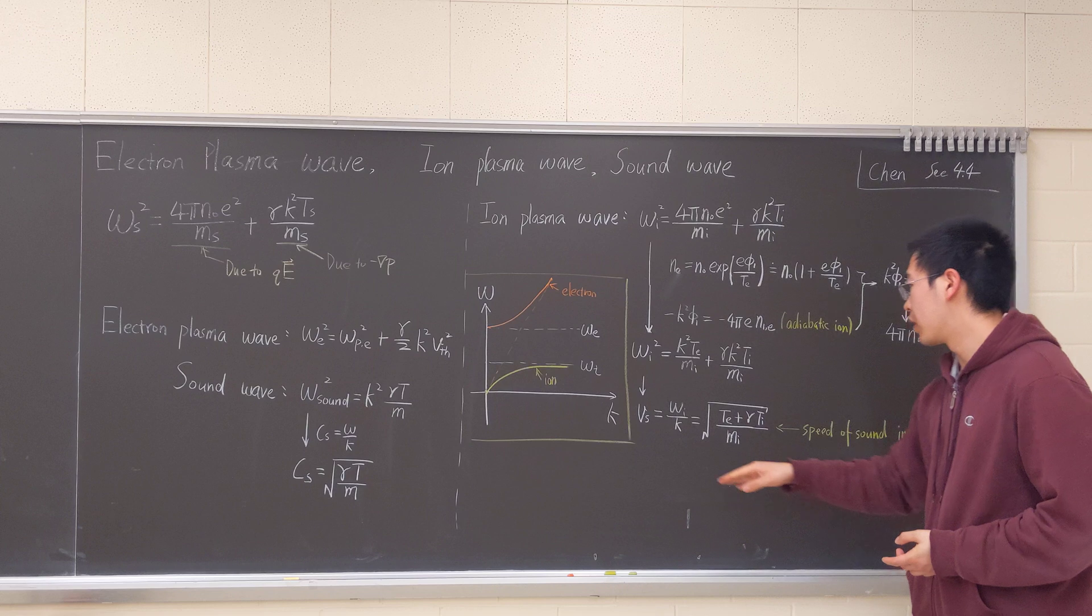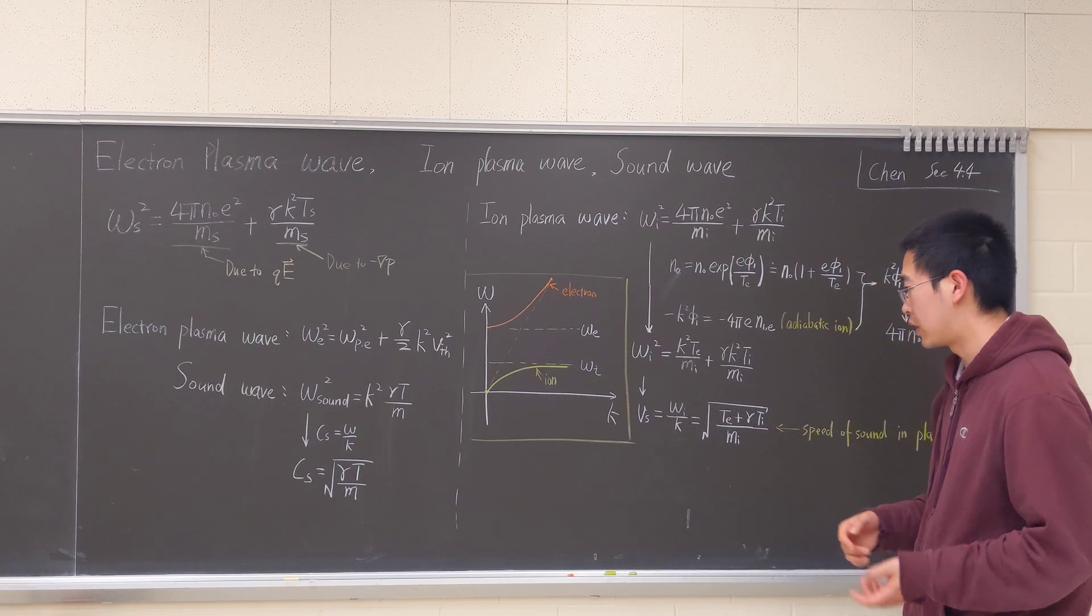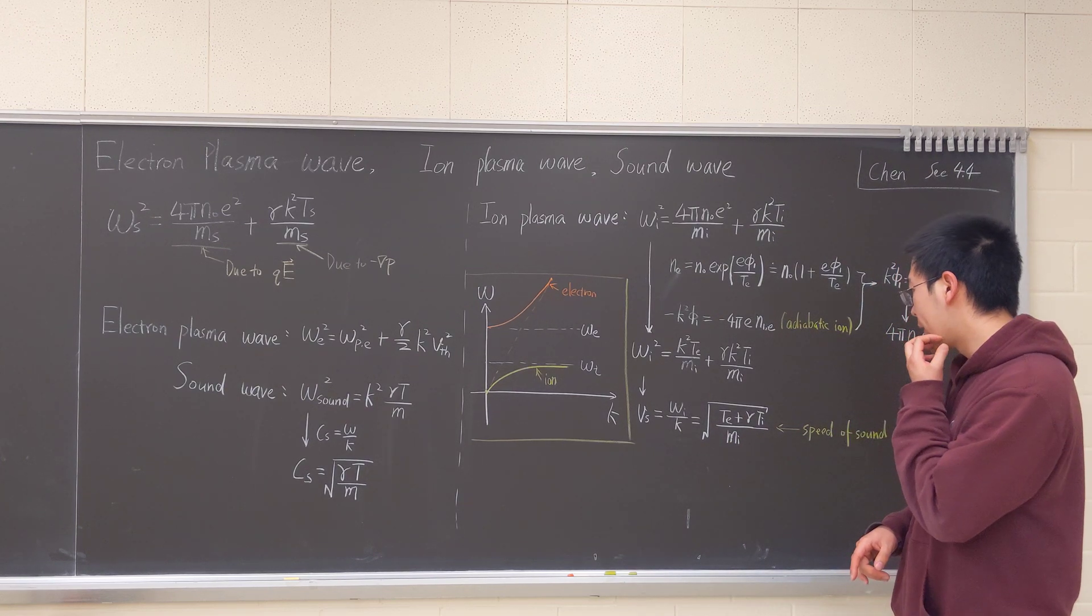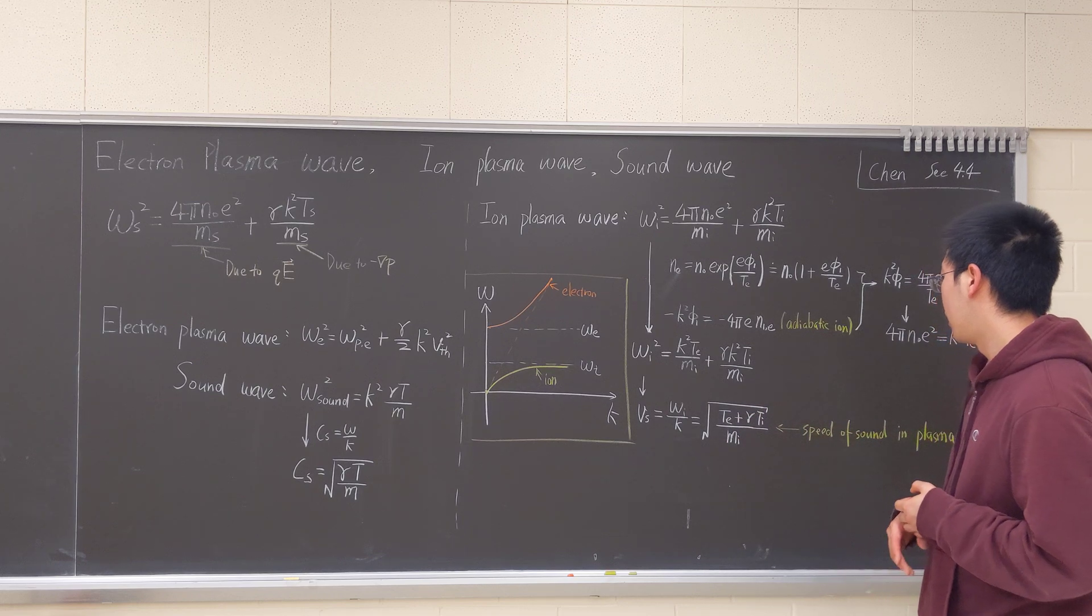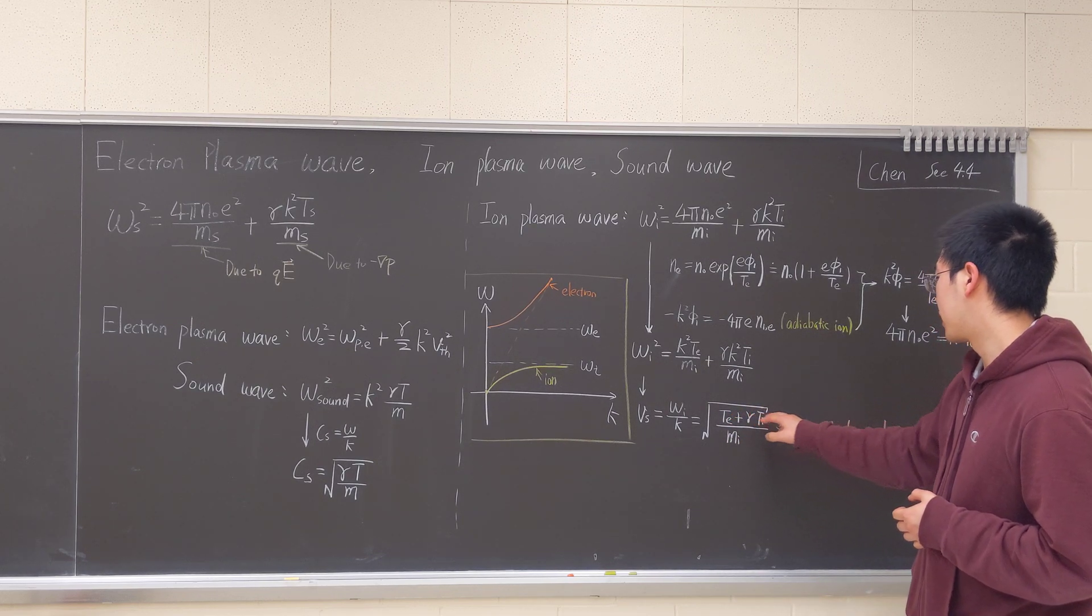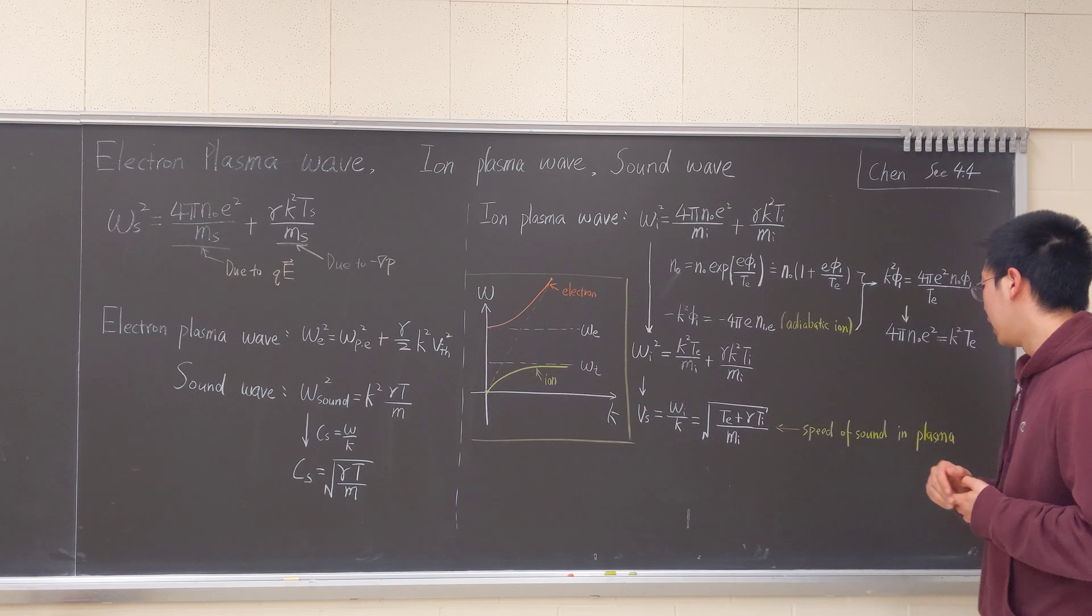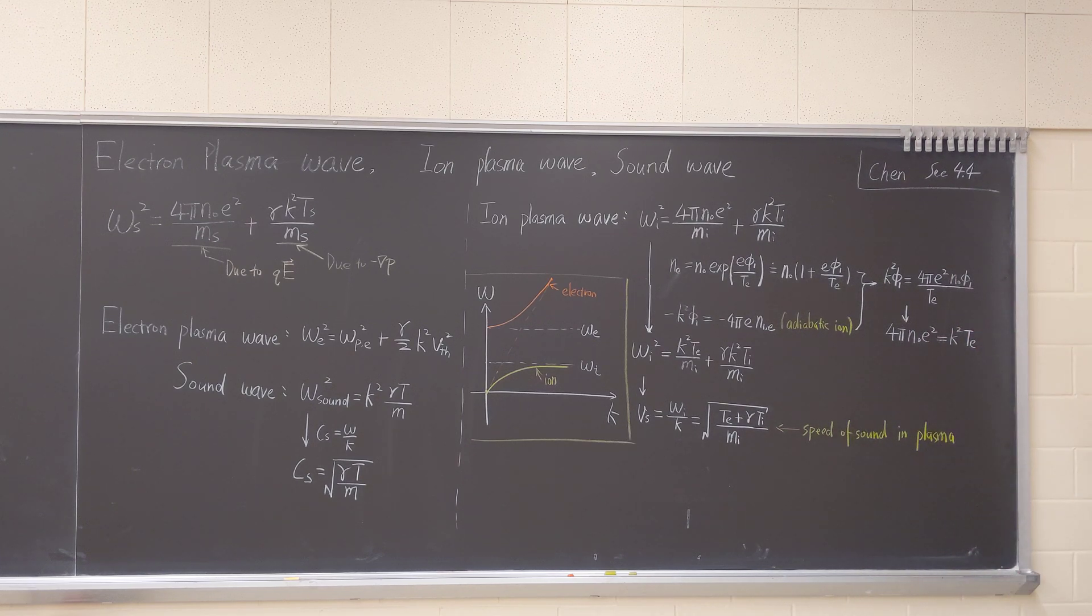So we know the phase velocity can be expressed as omega over K. Then we have square root T-E plus gamma T-I over M-I. That's the speed of sound in the plasma.